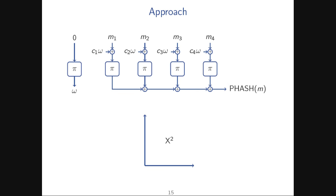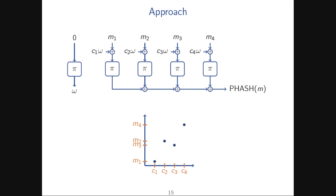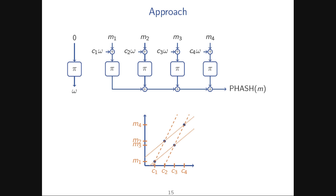The approach taken in the paper is to map the blocks to points in an affine plane over a finite field — taking message blocks, constants, and mapping them to points. The only time these all cancel each other out under a particular key is if they lie on the same slope. An adversary tries to maximize the number of slopes on which all points lie on the same line. That's the intuition for why the analysis is complicated.